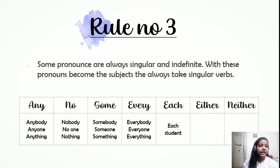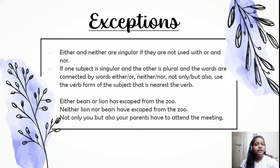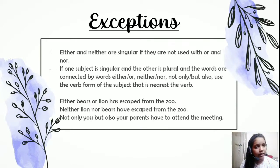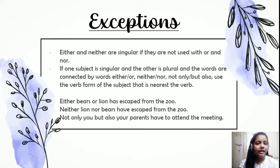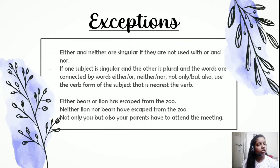'Neither of the students is selected for the quiz competition.' So the exception is: either and neither are singular if they are not used with 'or' and 'nor.' However, if one subject is singular and the other is plural and the subjects are connected by 'either...or,' 'neither...nor,' or 'not only...but also,' then the verb agrees with the subject that is nearest to the verb.